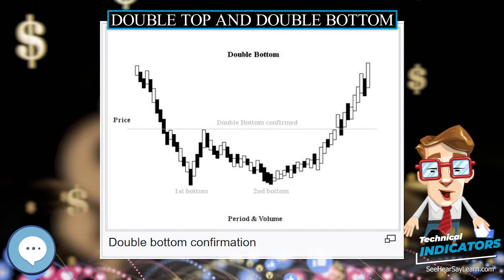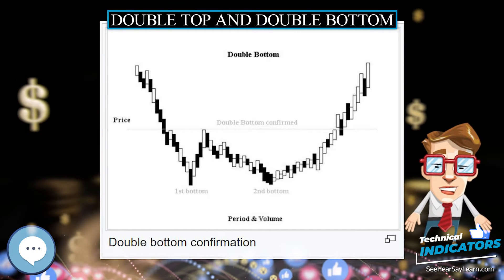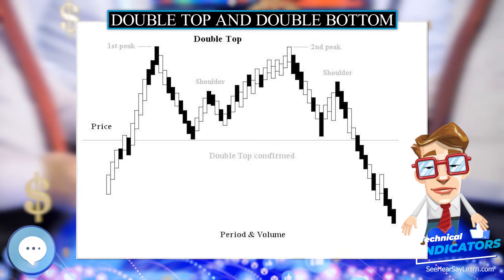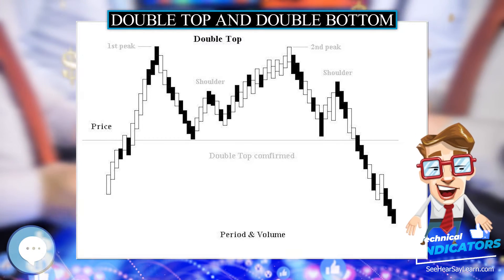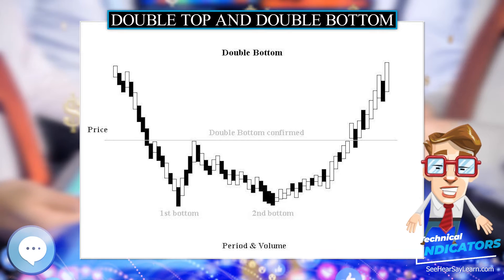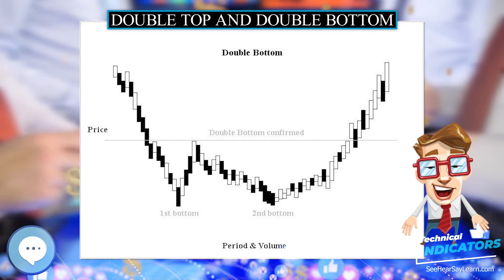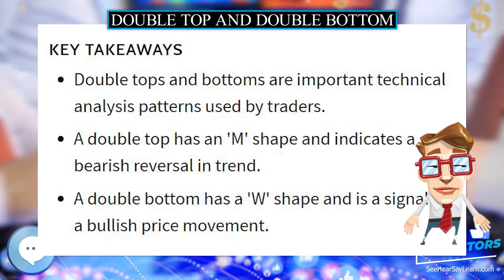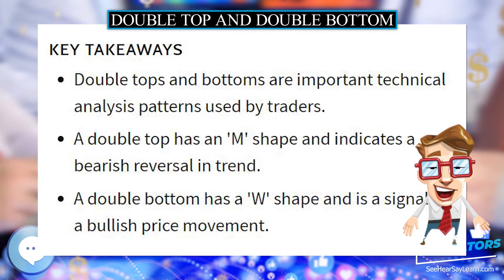The formation is completed and confirmed when the price falls below the neckline, indicating that further price decline is imminent or highly likely. The Double Top pattern shows that demand is outpacing supply — buyers predominate up to the first top, causing prices to rise.